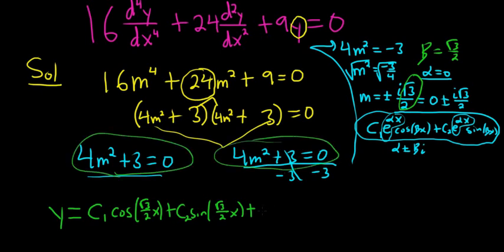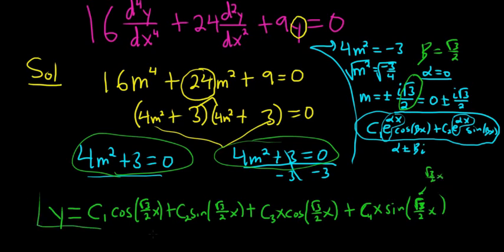So it'll be c3 x cosine square root of 3 over 2 x, plus c4 x sine square root of 3 over 2 x. That's the square root of 3 there, so square root of 3 over 2 x. And that is the final answer.